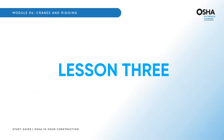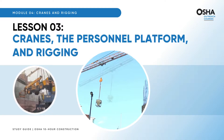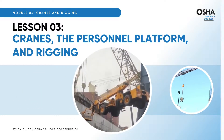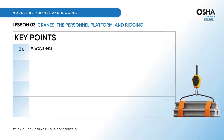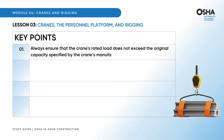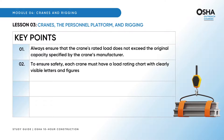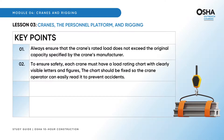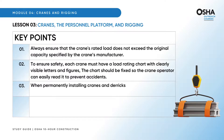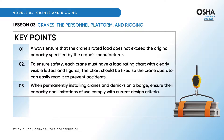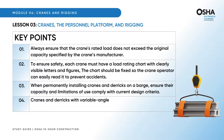Let's jump into our final lesson, exploring cranes — the personnel platform and rigging. The key points are: always ensure that the crane's rated load does not exceed the original capacity specified by the crane's manufacturer. To ensure safety, each crane must have a load rating chart with clearly visible letters and figures; the chart should be fixed so the crane operator can easily read it. To prevent accidents when permanently installing cranes and derricks on a barge, ensure their capacity and limitations of use comply with current design criteria. Cranes and derricks with variable angle booms must have a boom angle indicator placed where operators can easily see it.